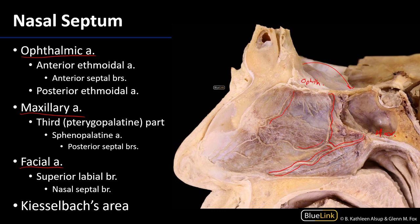Anteriorly, we have nasal septal branches which come from the facial artery. The superior labial branch of the facial artery is a very robust branch, and it can send a branch up towards the nose — that branch is the nasal septal artery, and you can see it moving that way.